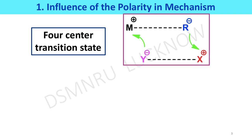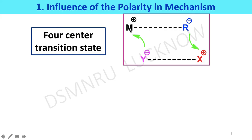First, we will discuss about bond polarity. Bond polarity will depend on the electronegativity of the metal. If the metal has electronegativity less than one, like s-group metals, lanthanides, and actinides, then in most cases it will be ionic in nature, except lithium and magnesium. If the metal has electronegativity more than one, then the bond nature between metal and carbon will be covalent in nature.